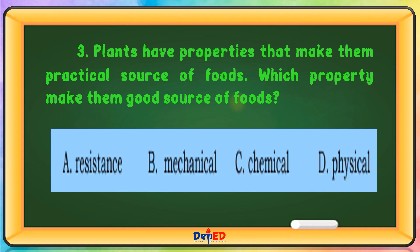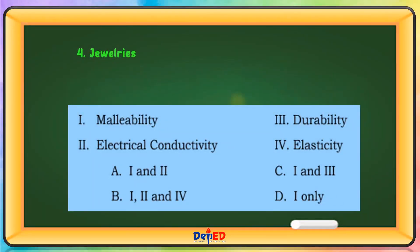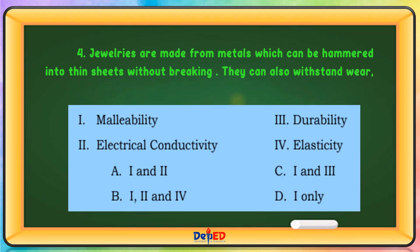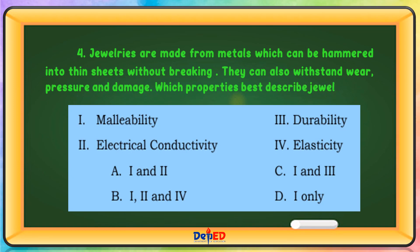Jewelries are made from metals which can be hammered into thin sheets without breaking. They can also withstand wear, pressure, and damage. Which properties best describe jewelries? The correct answer is Letter C: Malleability and Durability.